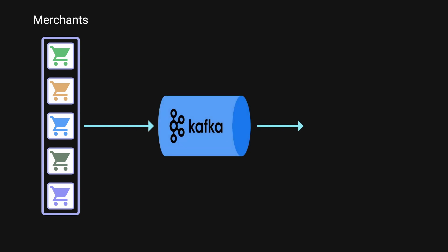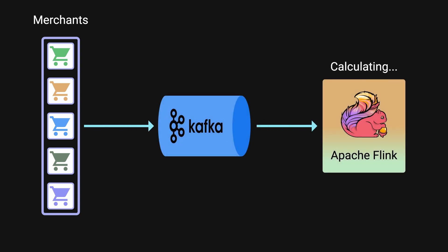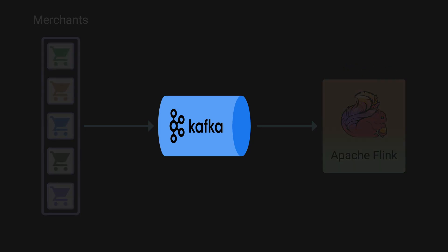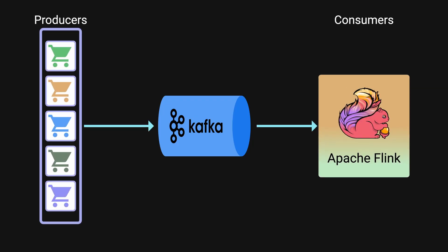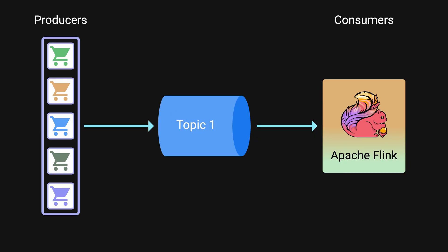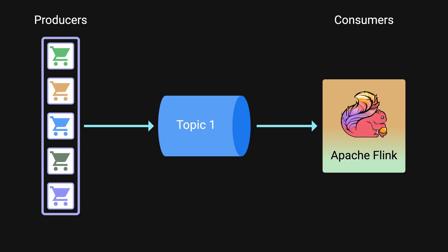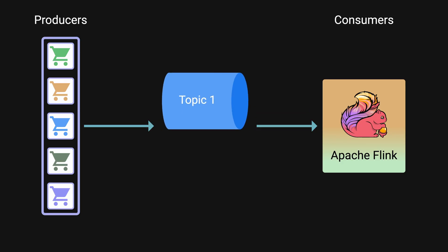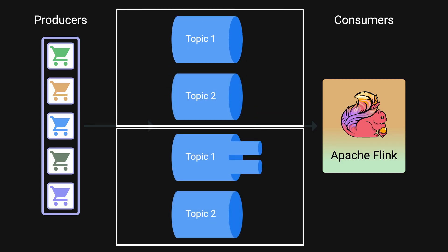The merchant data were sent to Kafka and ingested using Apache Flink to perform various calculations. Kafka is a distributed streaming platform used for building real-time data pipelines and streaming applications. It uses a publish-subscribe model, where producers generate data to a topic, and any system subscribed to that topic can read the data once it is available. Topics in Kafka serve as logical containers for data, acting as categories or feeds where records are written by producers and read by consumers.